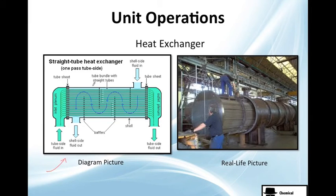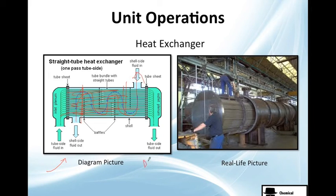A heat exchanger — in a textbook it's shown as a tube-in-tube exchanger: many tubes, one fluid comes in here and the other fluid goes through the tubes without physically touching. One fluid goes inside the tubes, the other goes outside. In real life, this one actually looks nice and you can see the tubes, but normally in real life you'd only see a huge pipe and think it's just a pipe, not a heat exchanger.